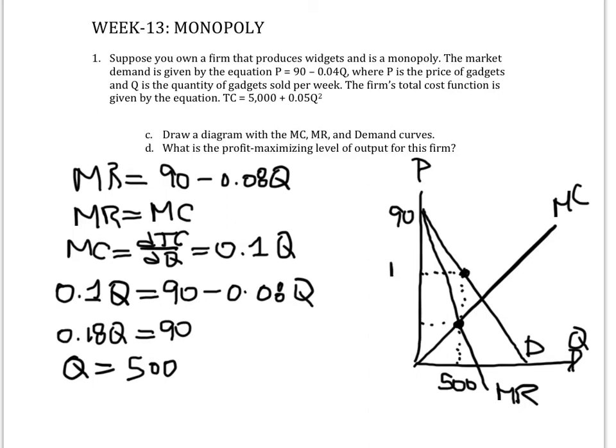So the price will be this price monopoly right here. And in order to find that, you need to replace the 500 in the demand equation, not the marginal revenue, but on the demand equation because that is the demand curve. That's what the monopolist will use to price.